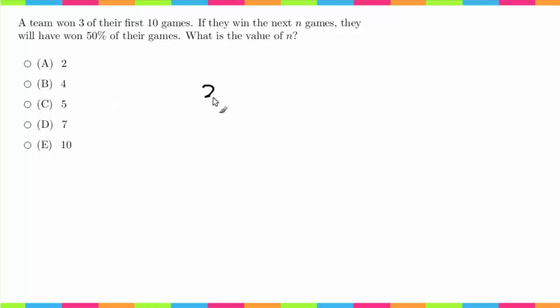3 plus 2 out of a total of 10 plus 2 games. This fraction gives us 5 out of 12, and we're looking for what number we add here to get 50%.